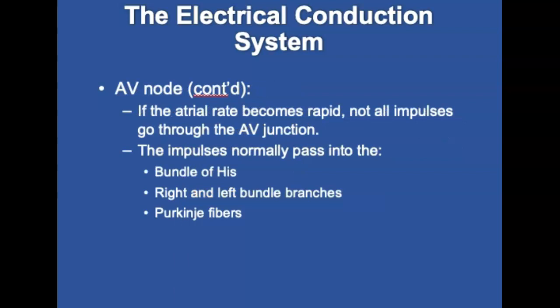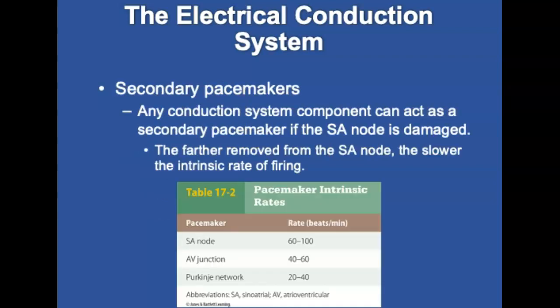Normally, impulses pass through the AV junction into the bundle of His, then move rapidly into the right and left bundle branches on both sides of the intraventricular septum. If the atrial rate becomes very rapid, the AV junction can regulate the number of impulses that reach the ventricles. They then spread into the Purkinje fibers. An electric impulse spreads across the ventricles at about 0.08 seconds while the ventricles simultaneously contract.